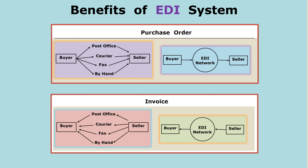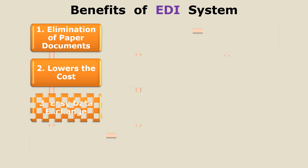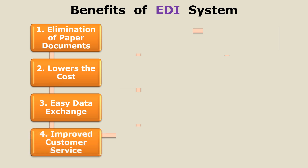Similarly, when the seller generates an invoice, in the traditional system it is sent to the buyer by post, courier, fax, or by hand, whereas this is eliminated in the EDI system. In this way EDI eliminates paper use and reduces cost. The third advantage is easy data exchange — data is stored in electronic format, making it very easy to exchange.